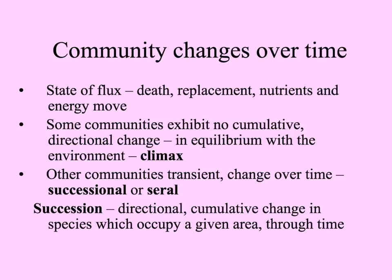Other communities are transient, present for only a small period of time — a few years, 10, 20, 30 years. These are called successional communities, or seral communities. Seres are the different stages of succession. Succession is defined as directional, cumulative change in species occupying a given area throughout time.